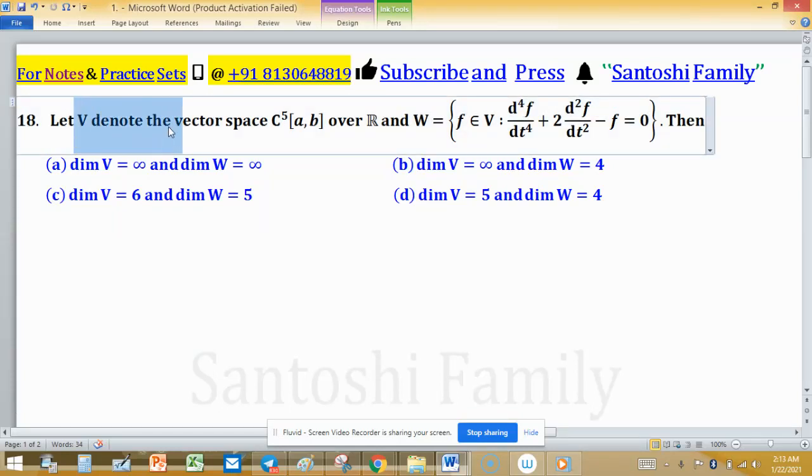Let V denote the vector space C^5 on closed interval [a,b] over R, and W is the set defined by all those functions which are belonging to V and satisfy this differential equation.